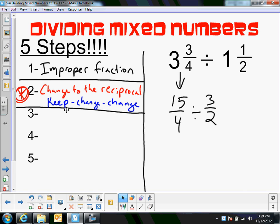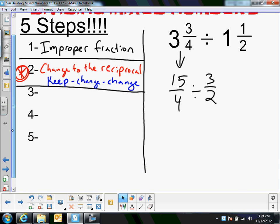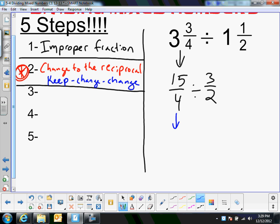So let me do that. I'm going to keep change change. I'm going to keep my first fraction the same. That's 15 fourths. Then I'm going to change the division and the next fraction. So I kept, and I'm changing that to multiplication. And I'm changing 3 halves to 2 thirds, its reciprocal by flipping the, switching the two numbers. So I kept, and then I changed, and I changed.